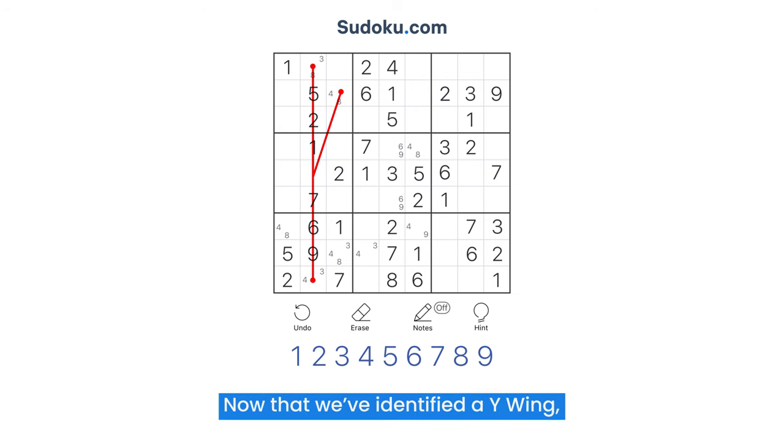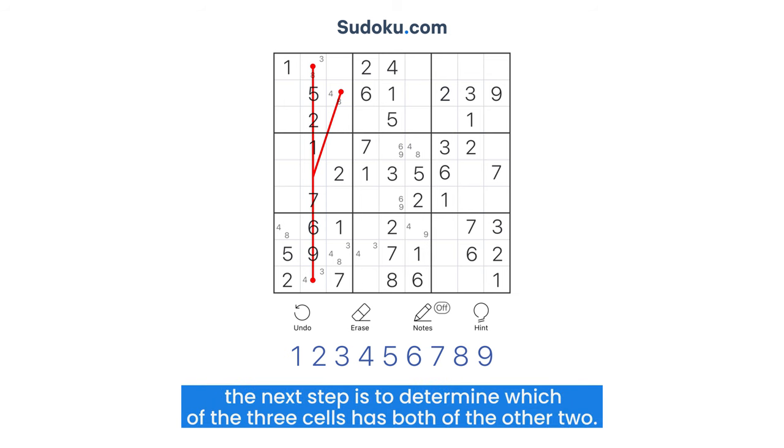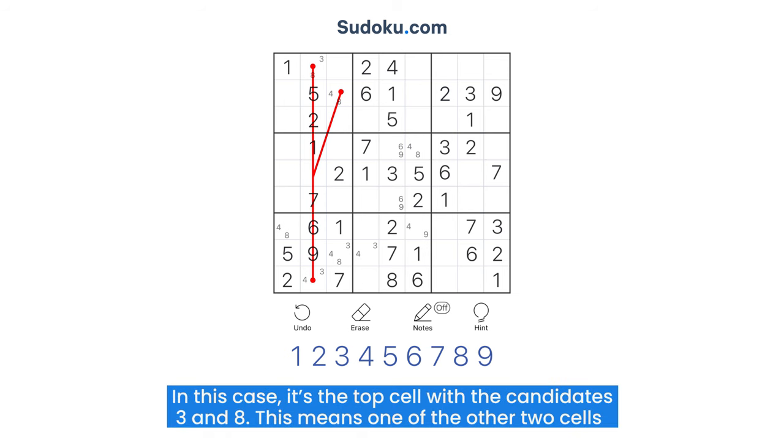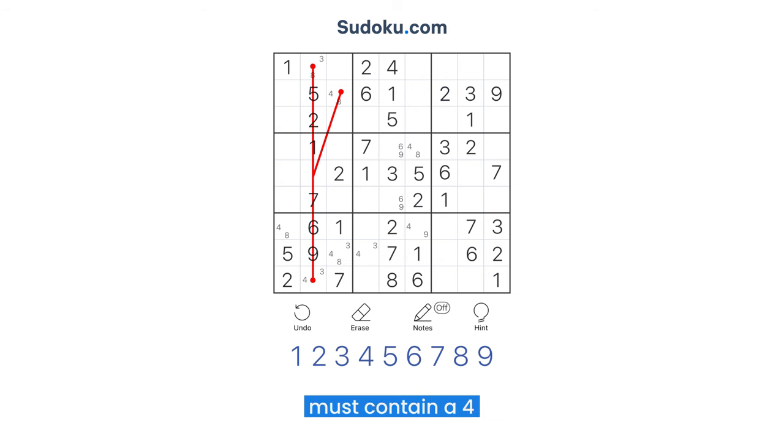Now that we've identified a Y-Wing, the next step is to determine which of the three cells has both of the other two. In this case, it's the top cell with the candidates 3 and 8. This means one of the other two cells must contain a 4.